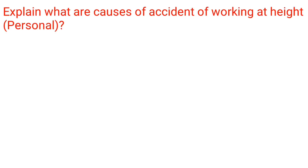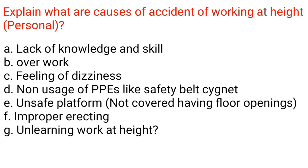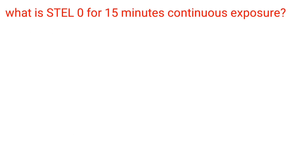Causes of accidents when working at height (personal factors): A. Lack of knowledge and skill. B. Overwork. C. Feeling of dizziness. D. Non-usage of PPE like safety belts. E. Unsafe platform, not covered, having floor openings. F. Improper erection of scaffolding. G. Undertaking work at height without proper training.